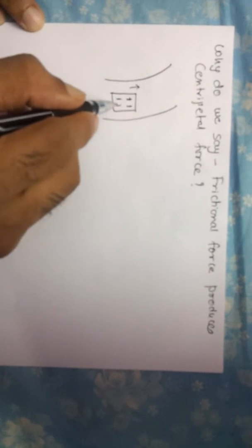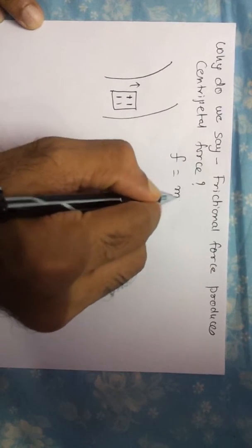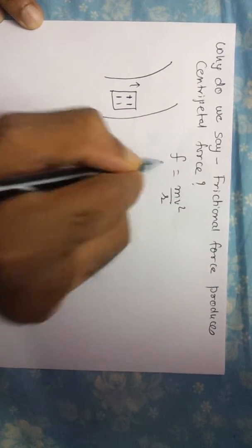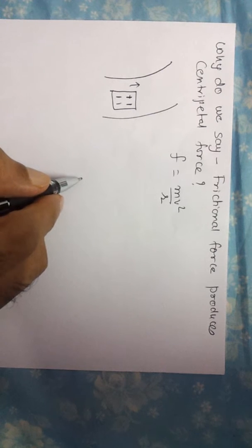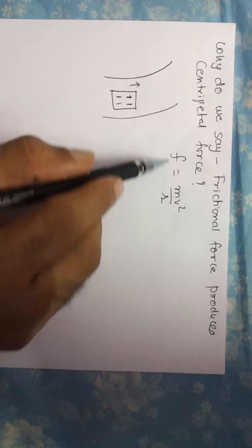What we generally do is say that frictional force is responsible for centripetal force. We say frictional force equals mv squared by r, or centripetal force equals F. I'm going to explain why this is so.